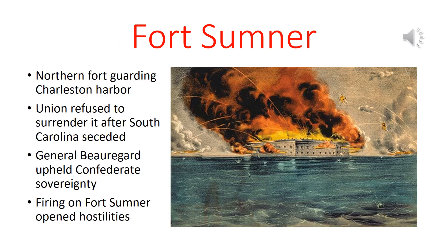The South seceded and formed its own government, but the North still held forts in the South — the most famous being Fort Sumter in Charleston Harbor, South Carolina. When the Union refused to surrender it, they refused to recognize the sovereignty of South Carolina and the new Confederacy, effectively declaring war and seizing Confederate territory. General Beauregard was forced to uphold Confederate sovereignty and opened fire on Fort Sumter — that is the beginning of the war. The Yankees at Fort Sumter surrendered, and the first victory went to the South.